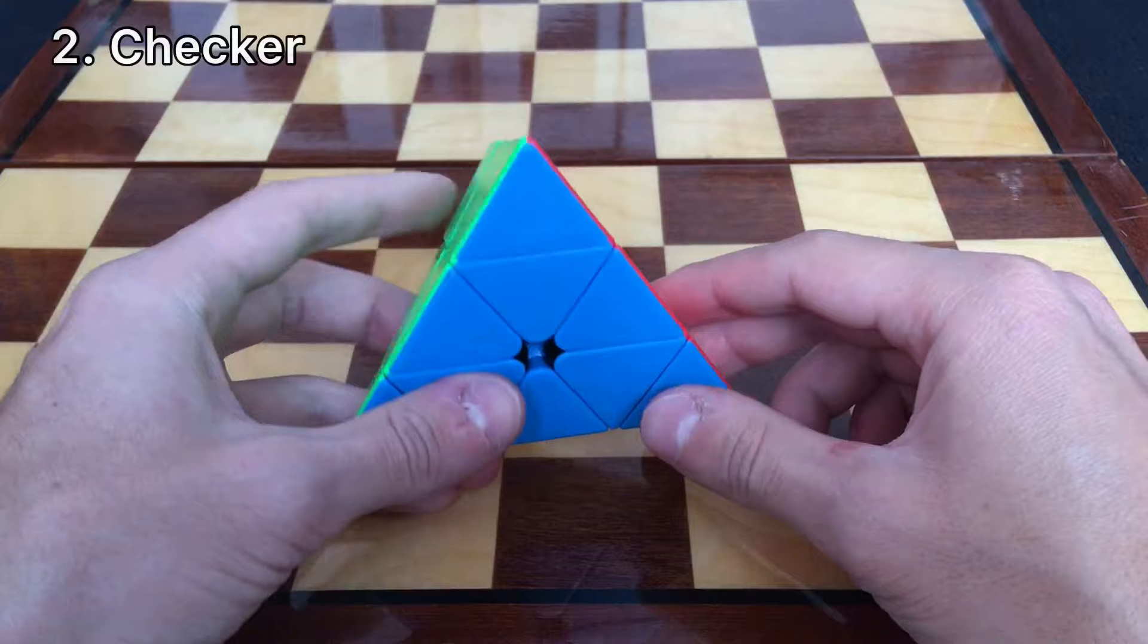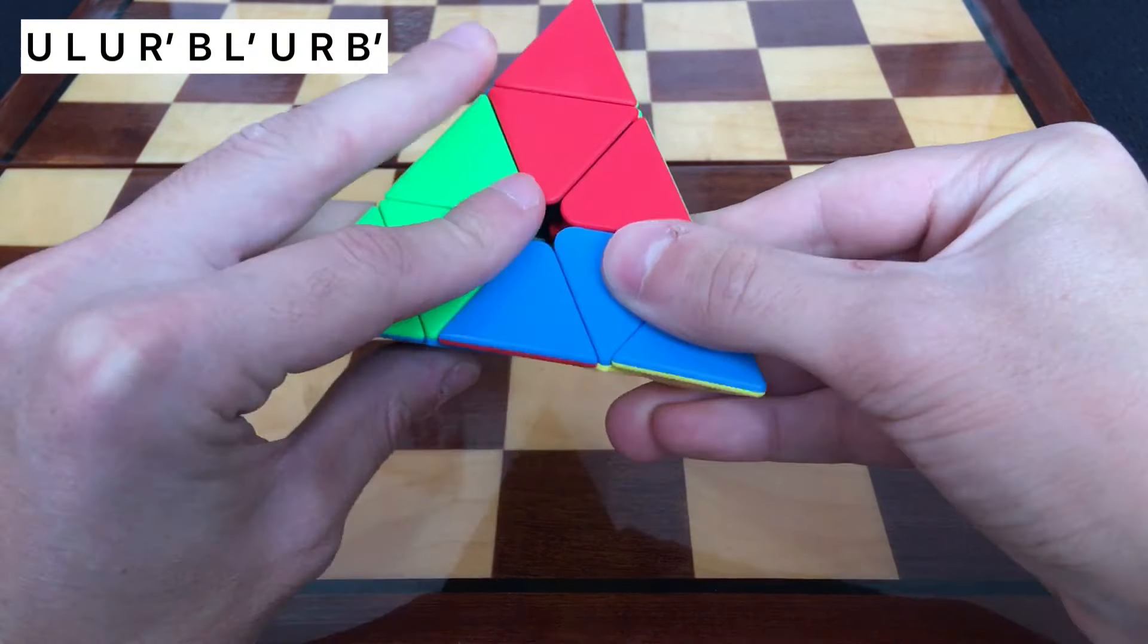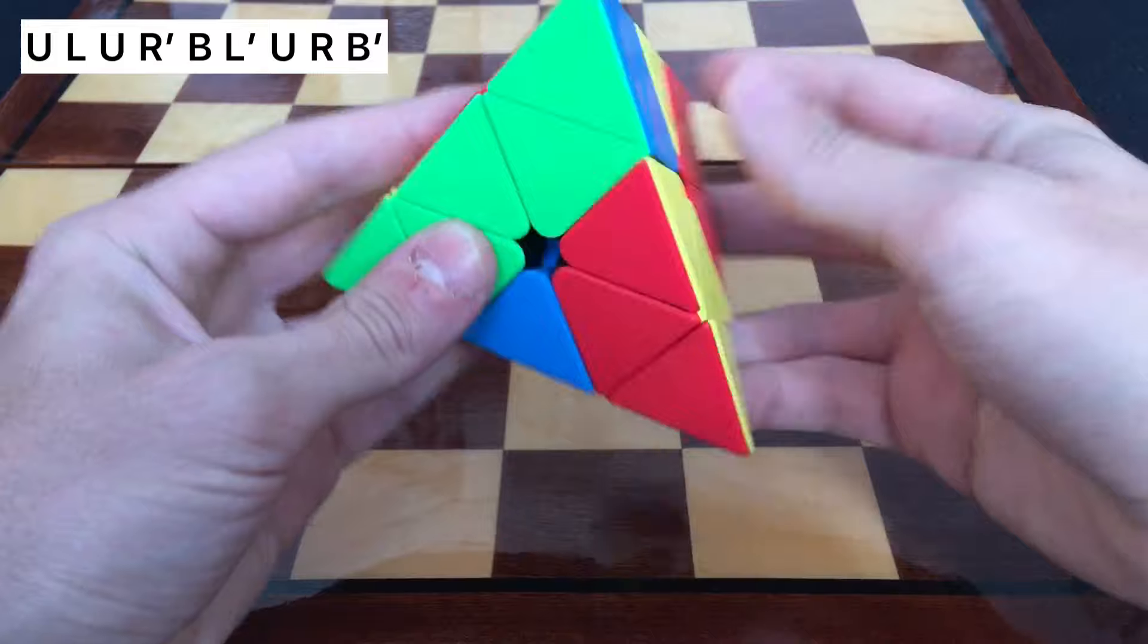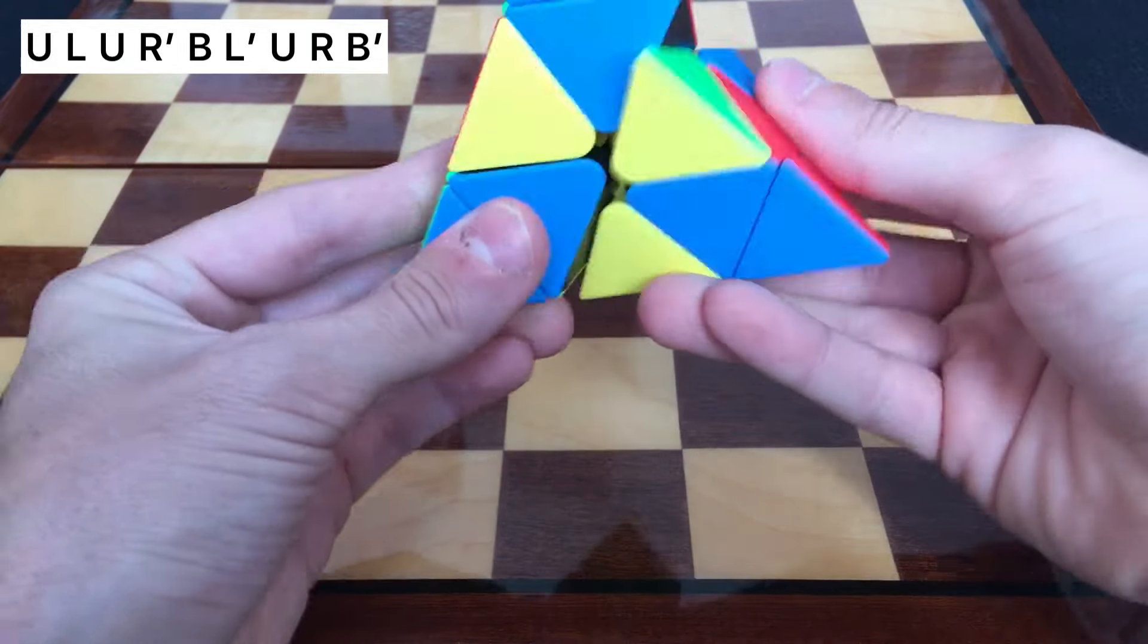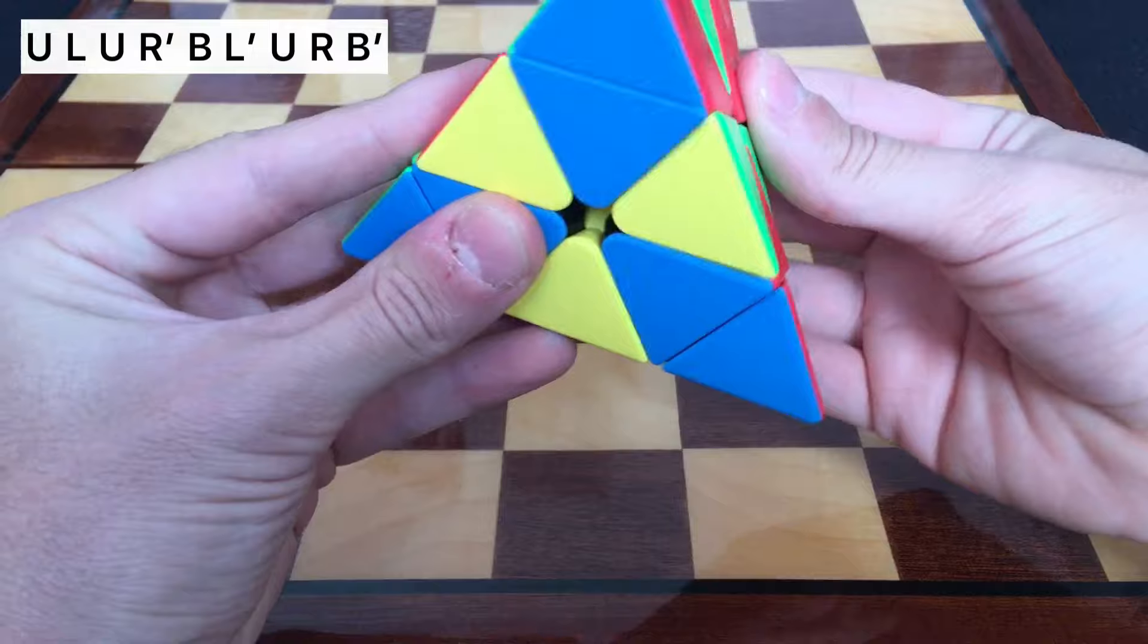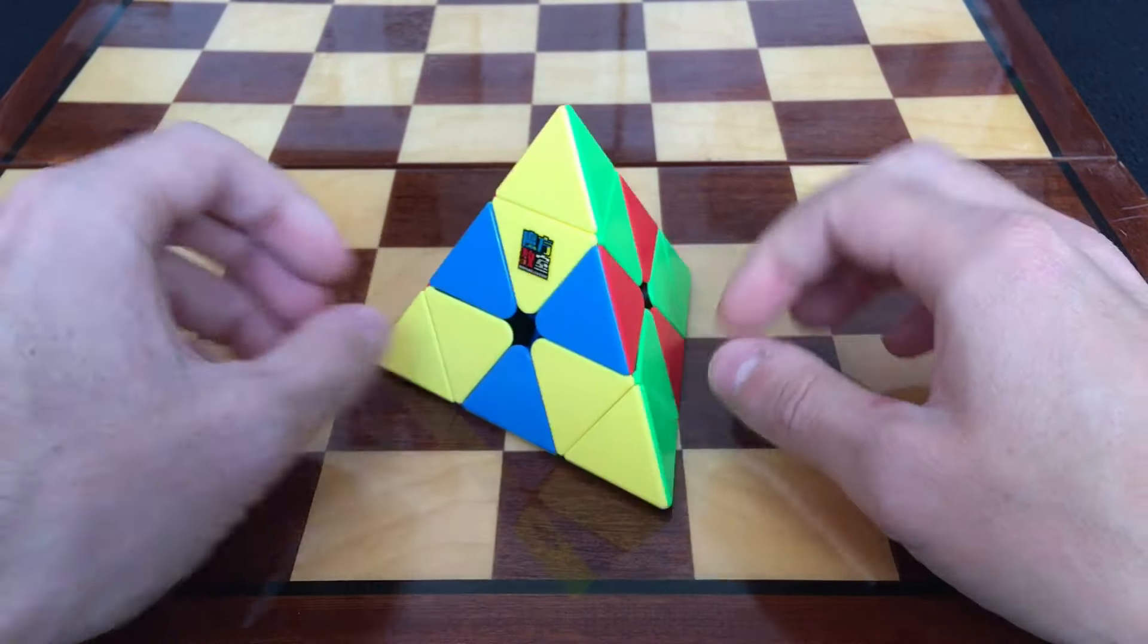The checker pattern: you do U L U R' Back L' U R Back'. This one I call the radioactive pattern, and this is the first part of the checker pattern.